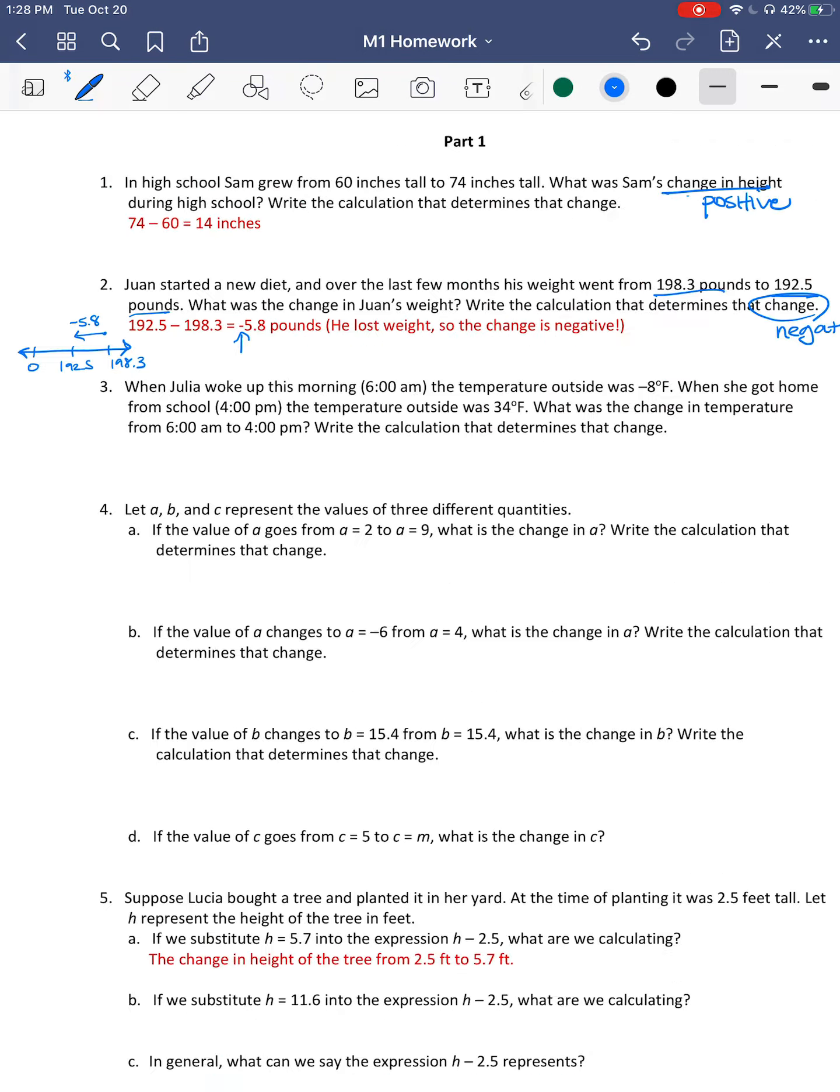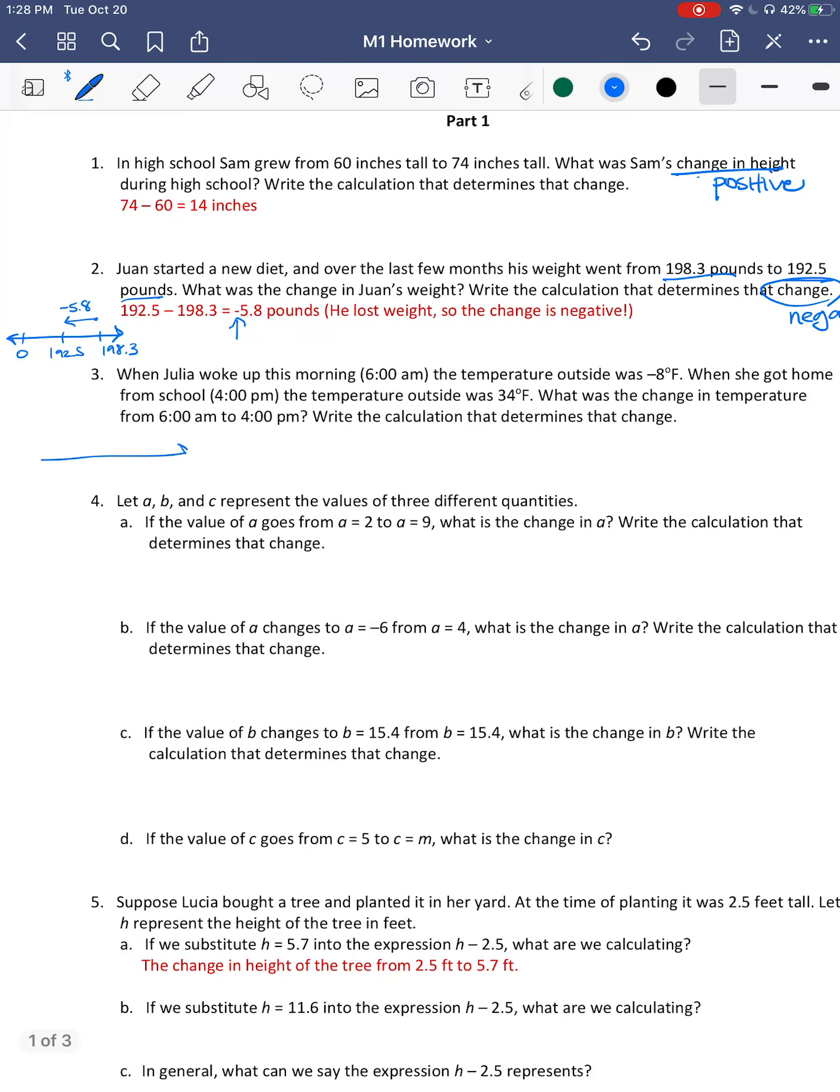It says when Julia woke up this morning at 6, the temperature outside was negative 8 degrees Fahrenheit. So I could do this if I wanted to. So negative 8. There's 0. When she got home from school, the temp outside was 34 degrees. What was the change in temp? So it started here and it went all the way to here. And so what is that change? To find it, we would do 34 minus a negative 8 in this case, which is going to be a positive 42 degrees Fahrenheit. That should make sense because from negative 8 degrees to 0 went up by 8 degrees, but then it had to go up 34 degrees more. So altogether, it's kind of like we ended up adding.